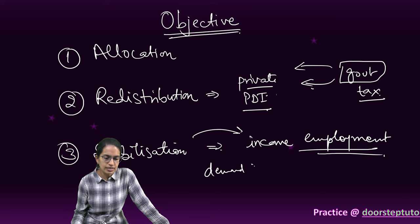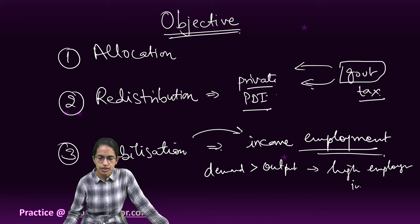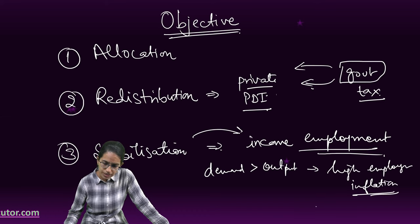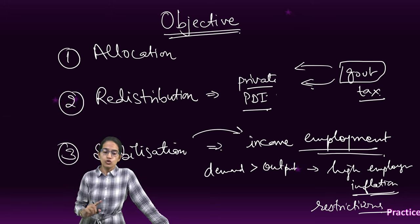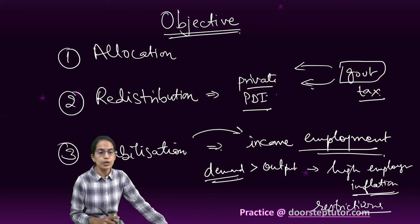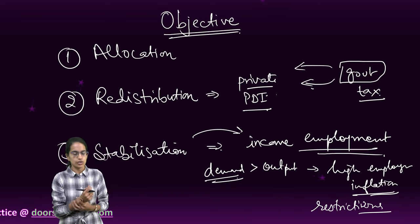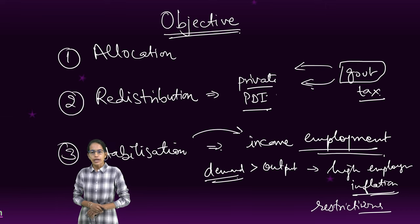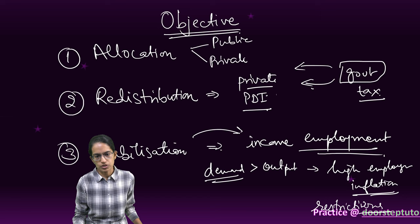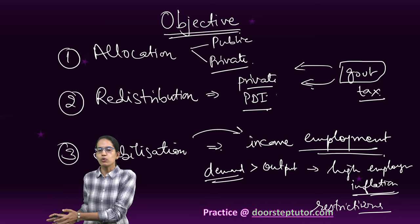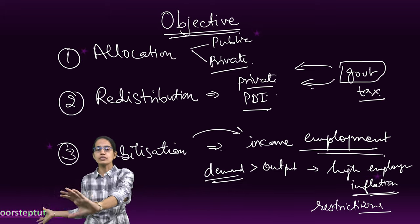If demand is much greater than output, that means there is high employment, which leads to inflation. Once there is inflation, the government needs to bring in restrictions, otherwise inflation would further soar. So when demand is more, higher employment leads to higher inflation and restrictions become necessary. The next objective is allocation of resources. Goods can be classified as public goods and private goods — private goods like a house, car, or cycle, and public goods like roads, street lights, and water systems.